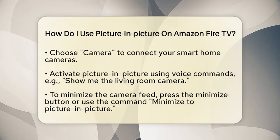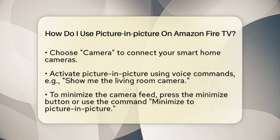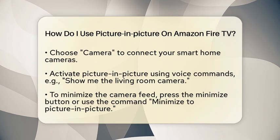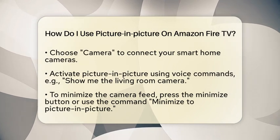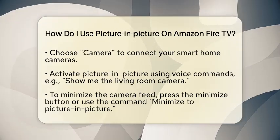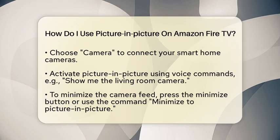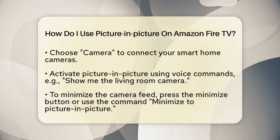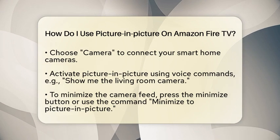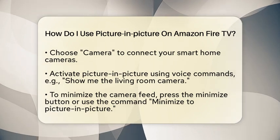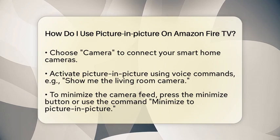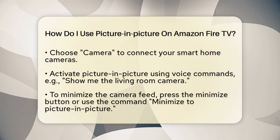Once your cameras are linked, you can activate picture-in-picture using voice commands. For example, if you want to view your living room camera, simply say, "show me the living room camera." This will display the camera feed in full screen. To minimize it to picture-in-picture mode, press the minimize button on your remote or use the voice command, "minimize to picture-in-picture."